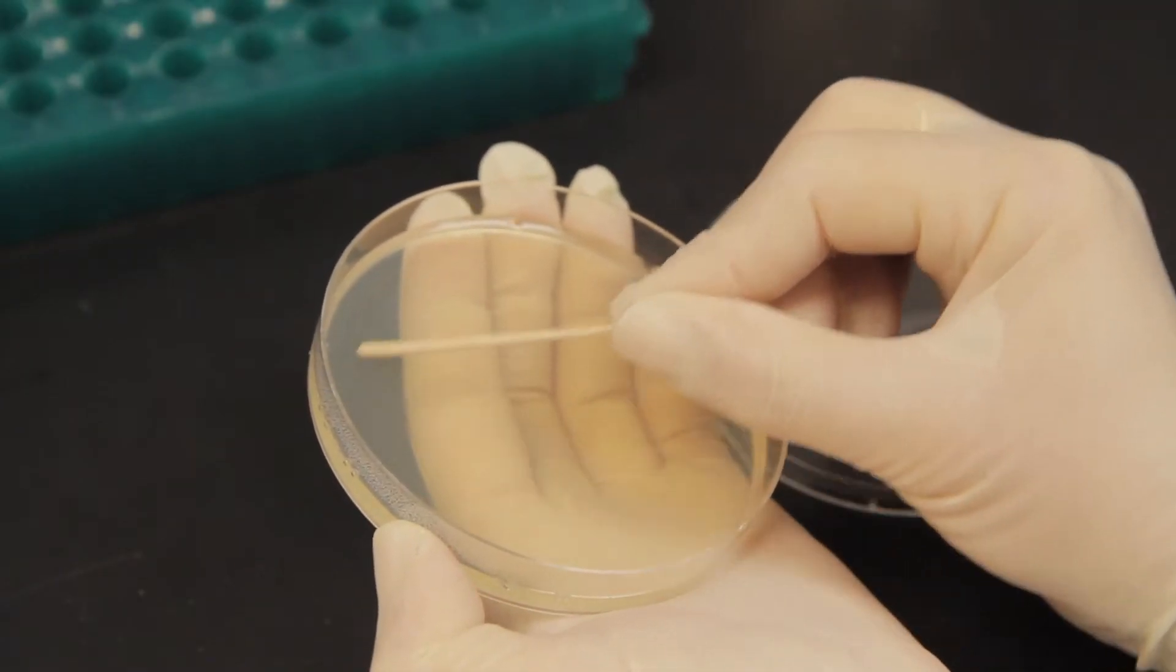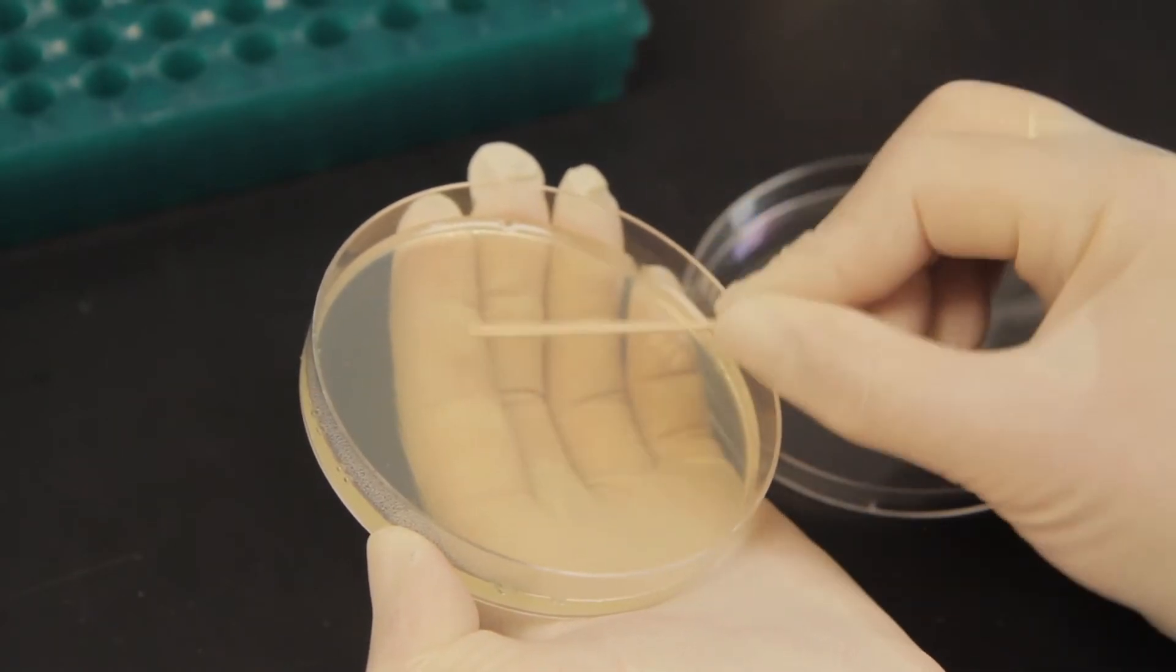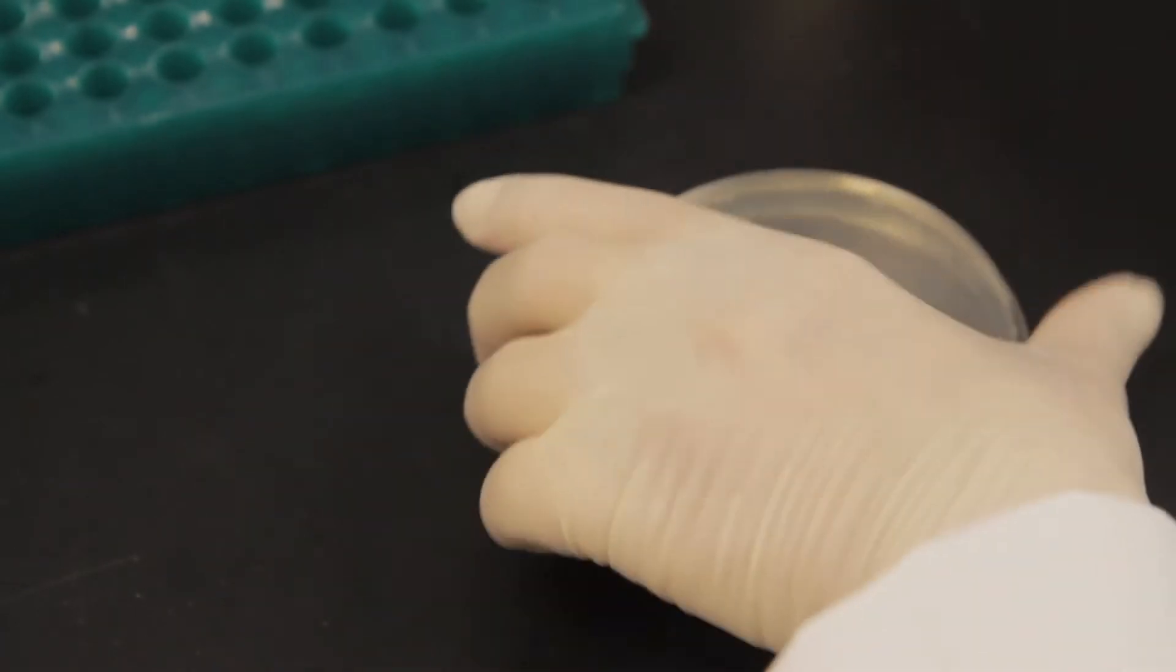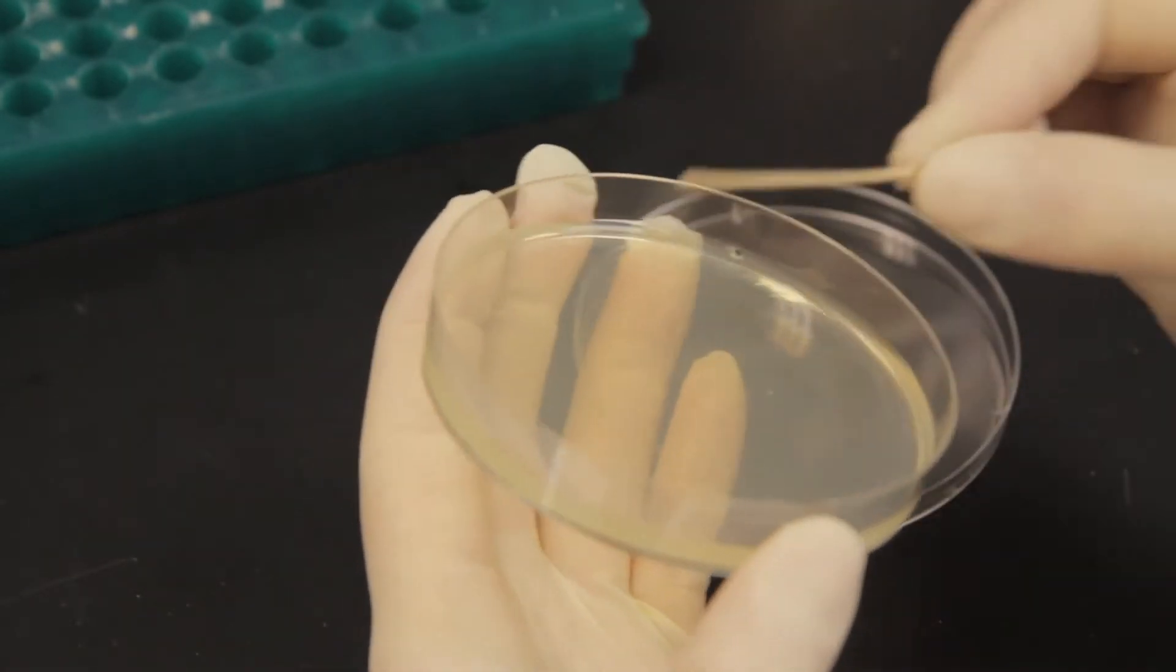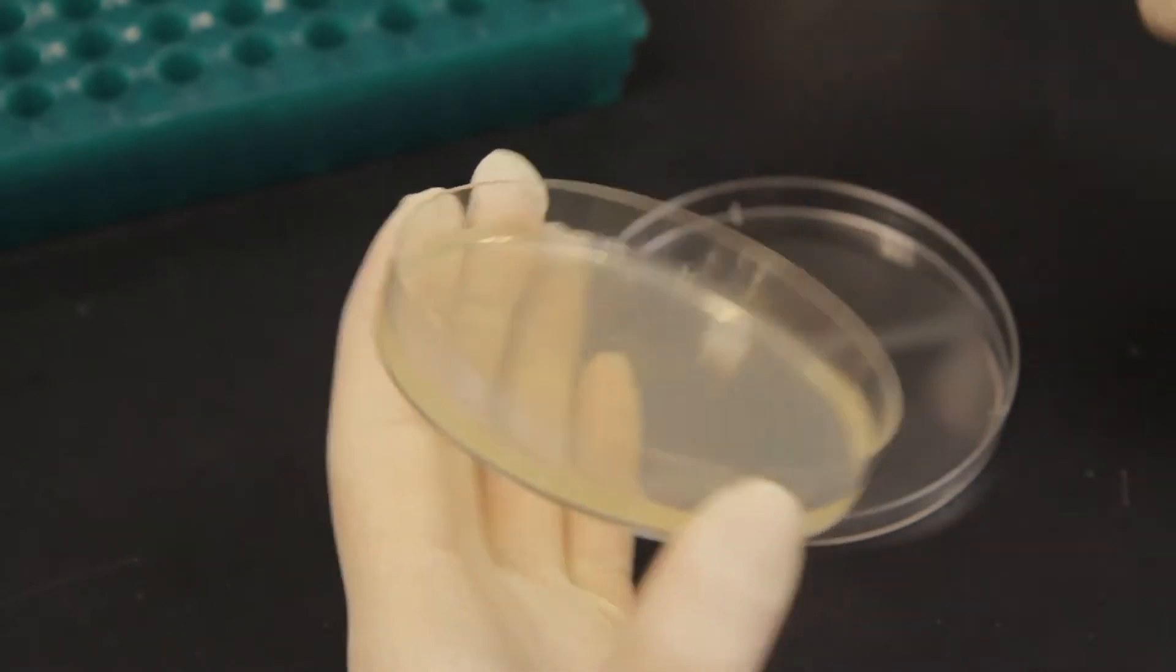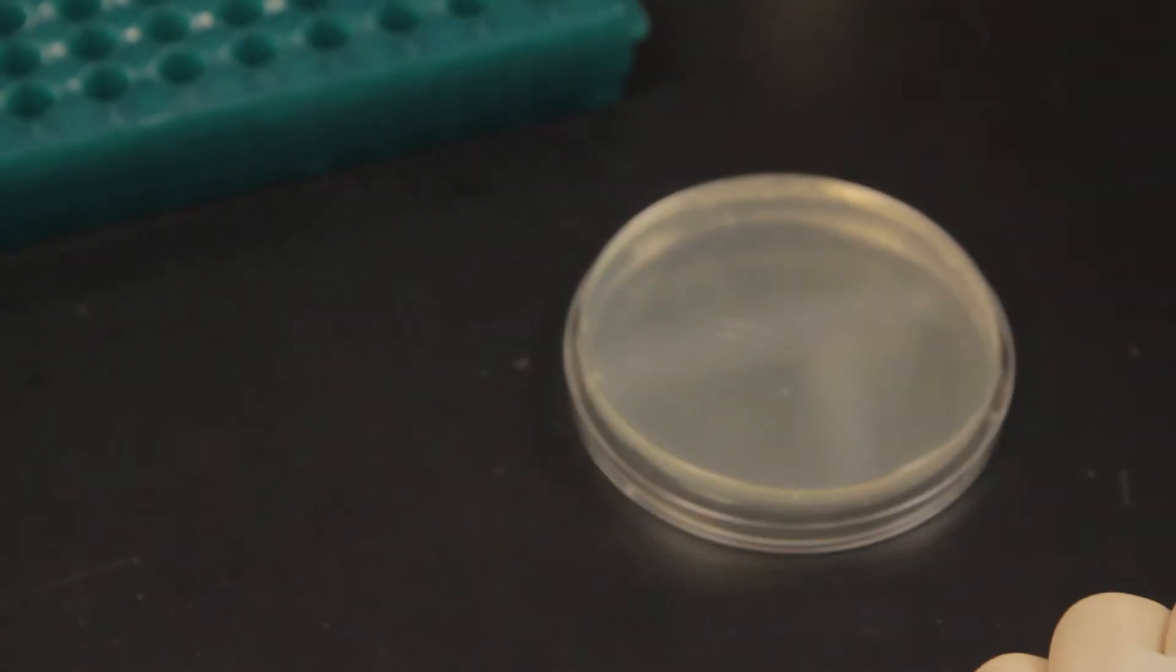Using a new toothpick, drag through your first streak to pick up some bacteria, and then create several new streaks on a fresh part of the plate. Finally, drag a fresh toothpick through the second streak and create a final streak on the last part of the plate.